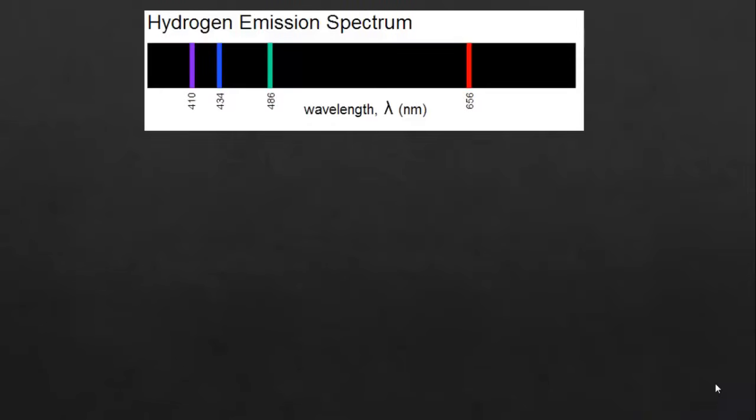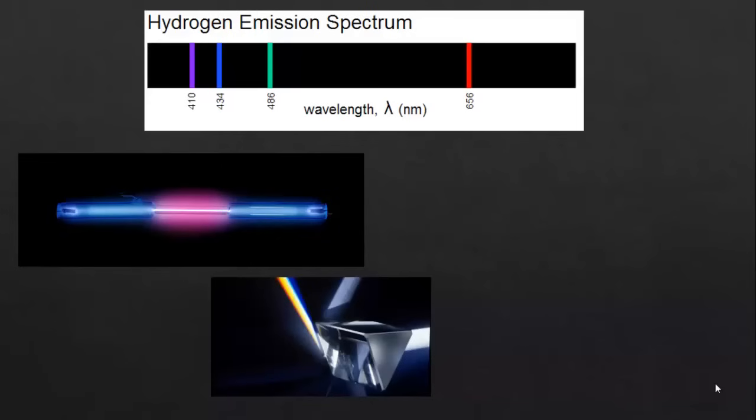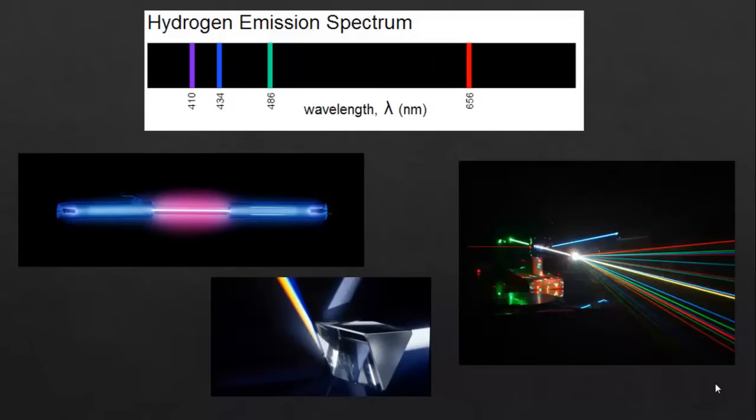This is the emission line spectra for hydrogen. This can be produced by exciting hydrogen gas, either by passing electricity through it or by burning it, and then using a prism or a diffraction grating to split the light up. The pattern that is produced is unique to this element. Here are some patterns for some other elements.